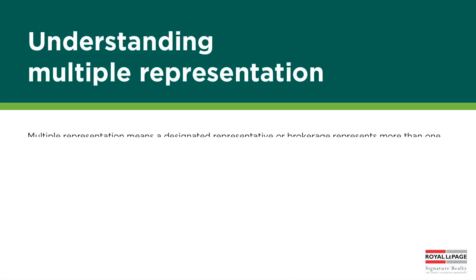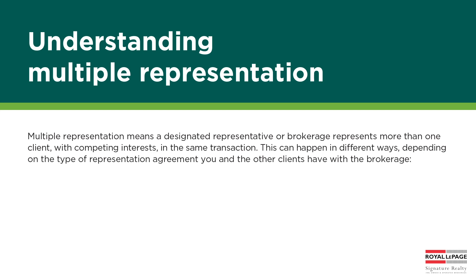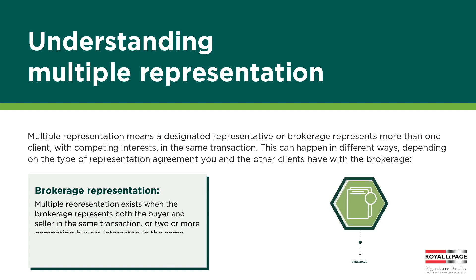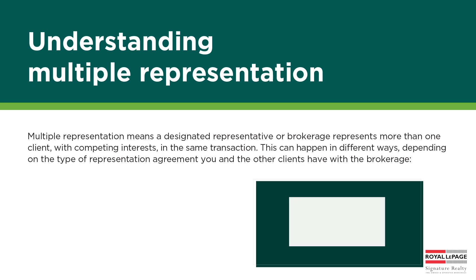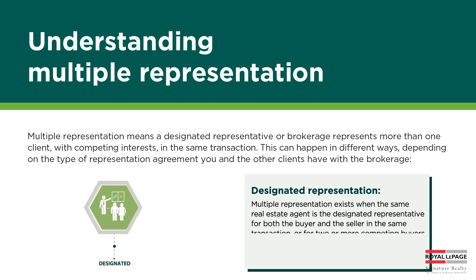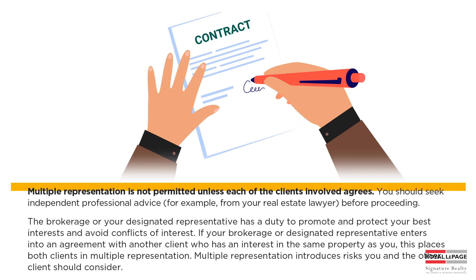Now, let's talk about multiple representation. This occurs when the same agent or brokerage represents more than one client in the same transaction. It's crucial to understand the implications and risks. Under brokerage representation, multiple representation exists when the brokerage represents both the buyer and seller in the same transaction. Under designated representation, multiple representation exists when the same agent is the designated representative for both the buyer and the seller in the same transaction. Multiple representation is not permitted unless each of the clients involved agree to it.